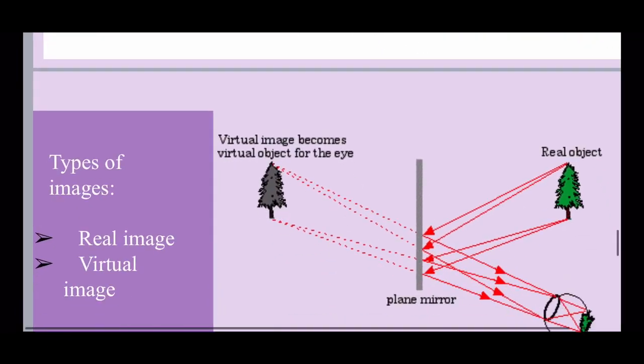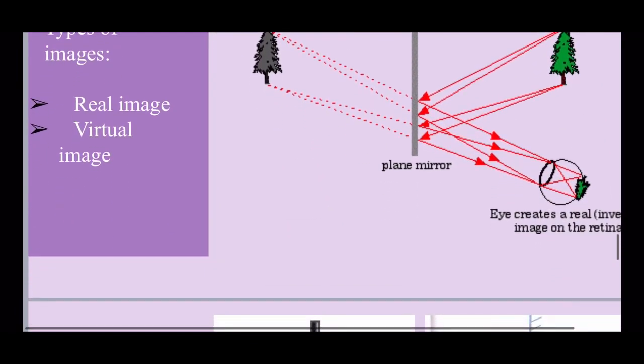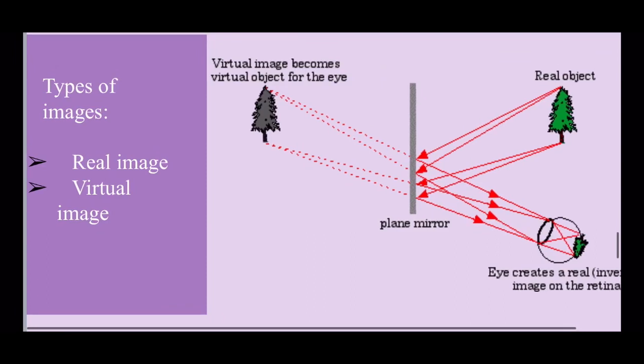Children, you must have seen your image in a mirror many times. Let us examine the properties of your image. Your image is virtual because it cannot be obtained on the screen. Your image will be erect. Your image will be at the same distance behind the mirror as you are in front of the mirror.